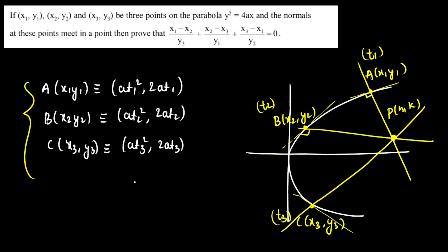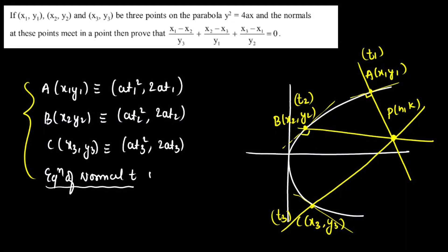Now I am going to write the equation of normal at any point t. The equation of normal is y = -tx + 2at + at³. Similarly, if you want the equation in slope form, you can replace m with -t, giving mx - 2m - am³. I am writing in parametric form right now.